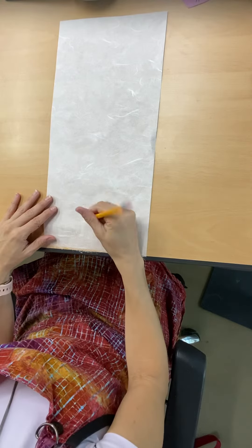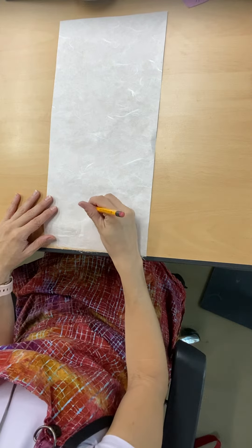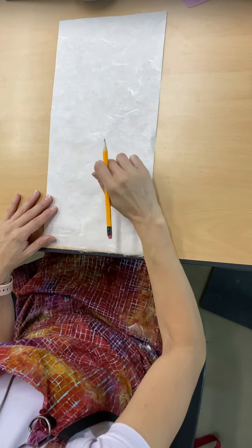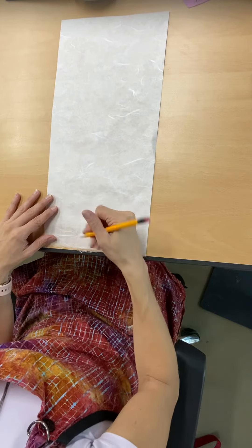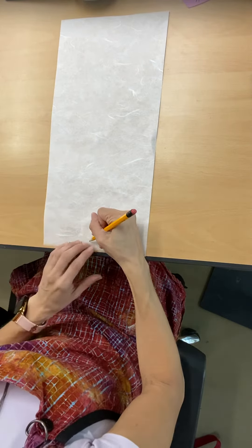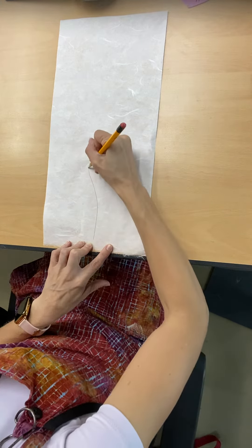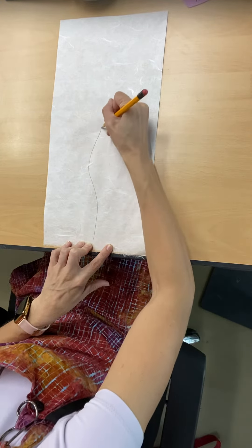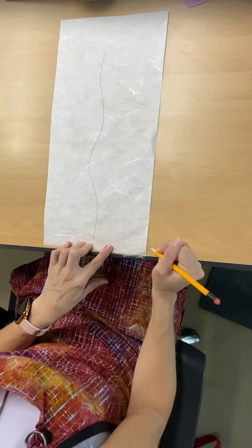All right, today we're going to draw your tree onto the hanji paper. We're going to start from the bottom and make our way all the way up, making it wavy like this. Pretty easy.